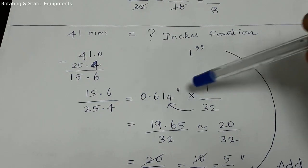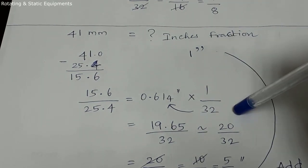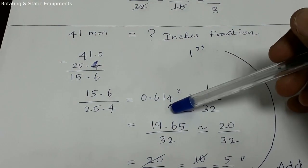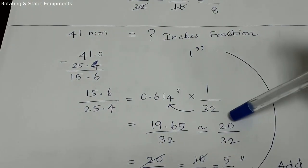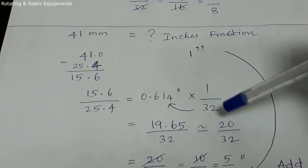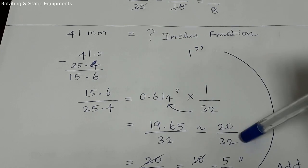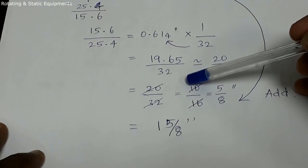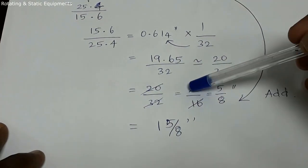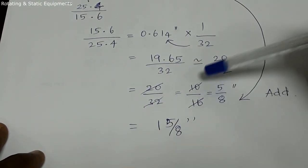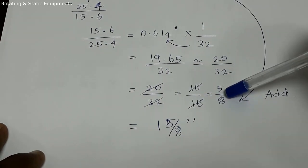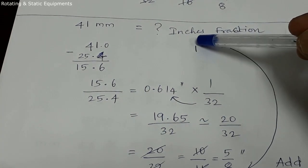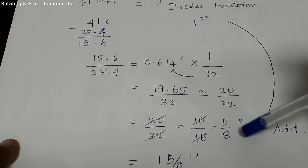Multiply by 1 divided by 32. So 19.65 divided by 32, giving approximately 19.5, which rounds to 20 divided by 32. That simplifies to 10 divided by 16.